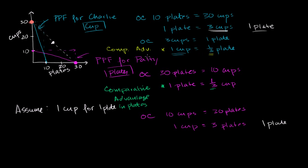We can't confuse this with absolute advantage. Absolute advantage in a given product means that you are more productive at that thing given the same inputs. So if you were just given this graph and didn't know how many workers Charlie or Patty had or how many inputs they're using to produce either 30 cups or 30 plates in a day, you actually could not make any statement about absolute advantage.